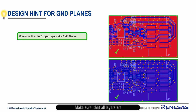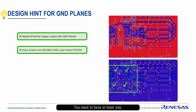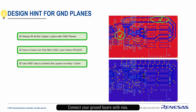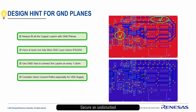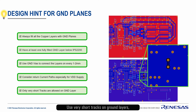Make sure that all layers are filled with ground. You need to have at least one fully filled ground layer below the IPS chip. Connect your ground layers with vias. Secure an undisturbed return current path for your supply. Use very short tracks on ground layers and only if necessary.